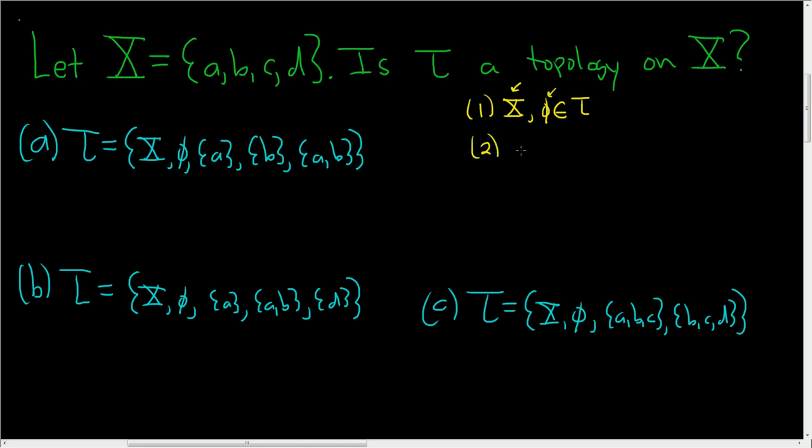Two, the union of any number of open sets is open. This could be rephrased as the union of any number of sets in tau is also in tau, right? Because the elements of tau are called open sets.